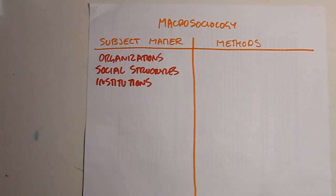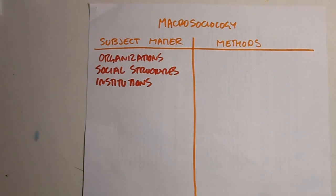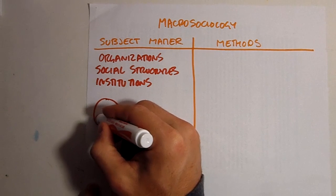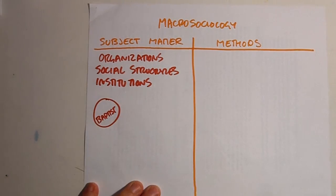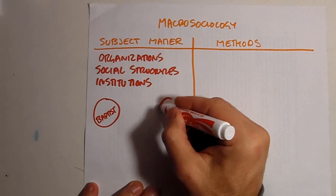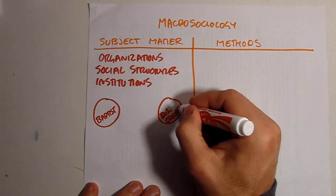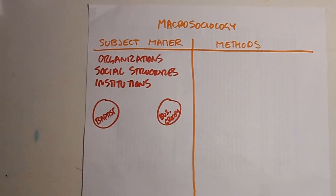One of the most interesting ideas within sociology is that these kinds of organizations — these large groups of people that have a social structure — can be viewed almost, but not quite, like individual actors. For example, if we take a specific church, say the local Baptist church, and a local business, say a grocery store, these are social structures, organizations, and institutions that have a role within their society.